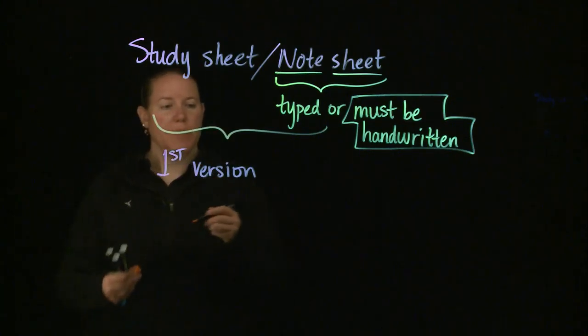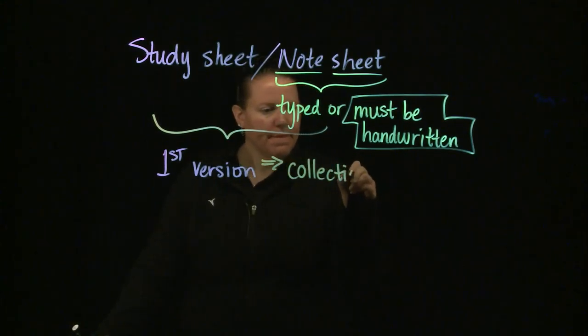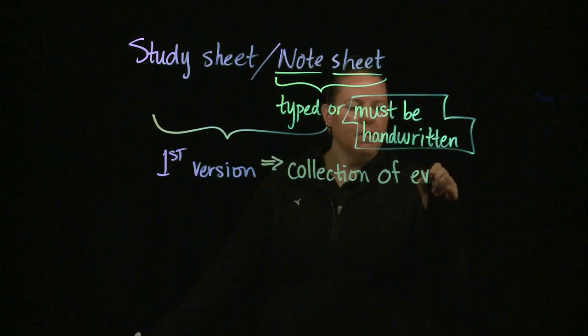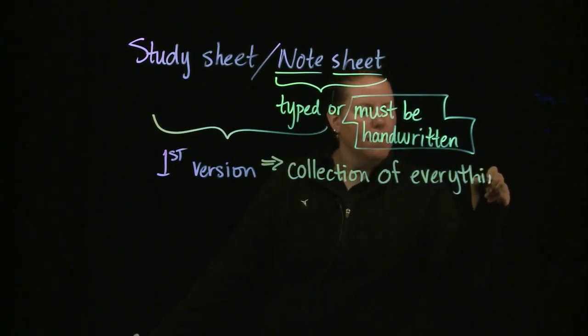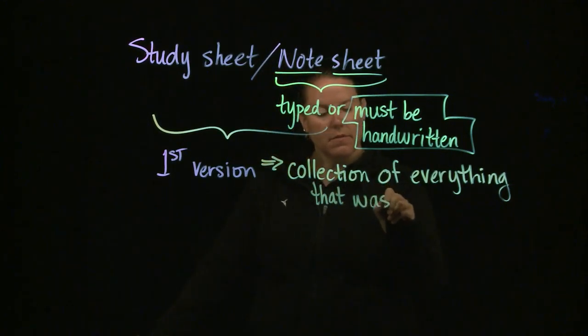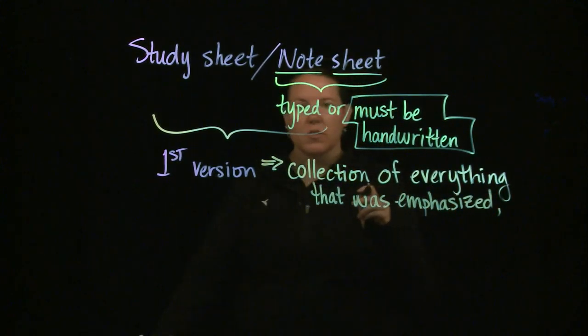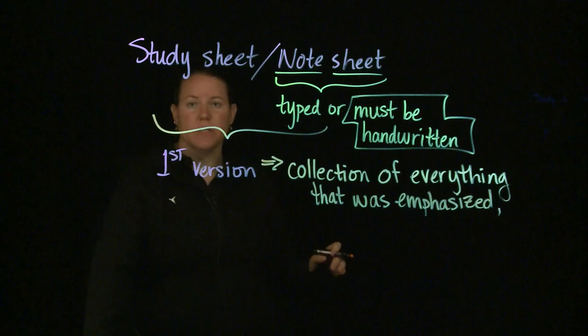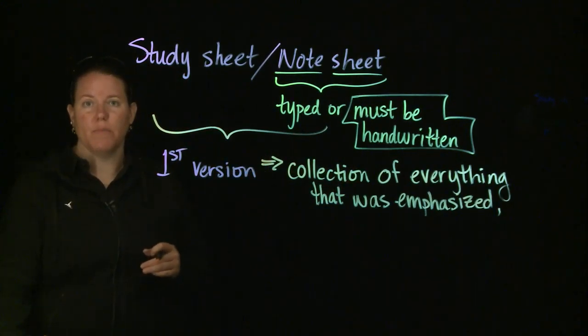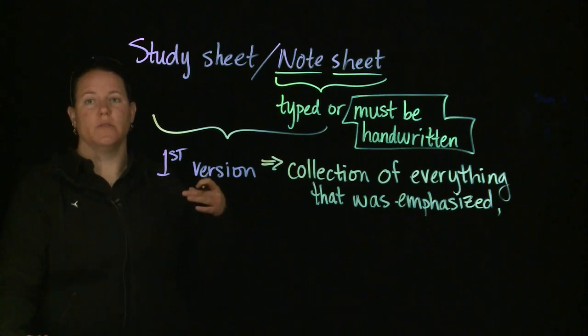So, the first version should be just a collection of everything - of everything that was emphasized. Everything that was emphasized by the professor. Everything you spent time on. Some professors actually write their tests based off of how much time was actually allotted to that idea. Some professors write their tests - I'm one of those professors that writes their tests more about the most important stuff that's for your future.